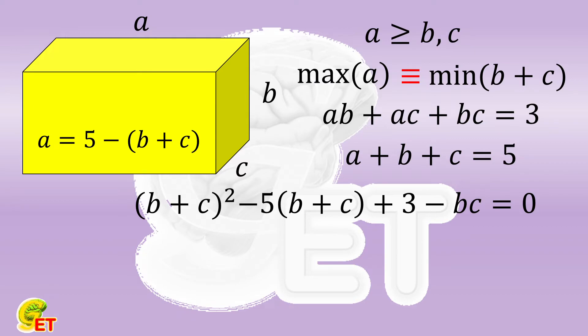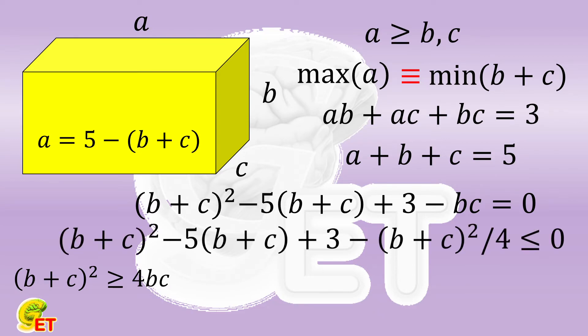Because we know that the square of B plus C is not smaller than 4 times B times C. By using this conclusion in the original formula, we will obtain an inequality. The square of B plus C minus 5 times B plus C plus 3 minus a quarter of the square of B plus C is not bigger than 0.